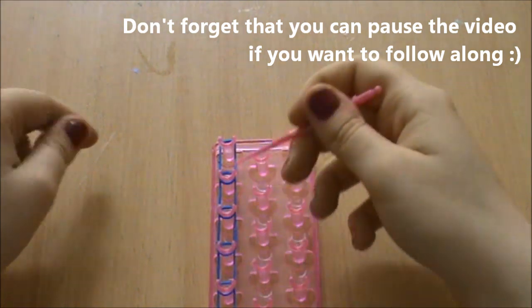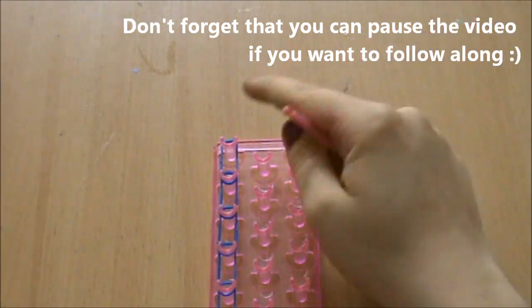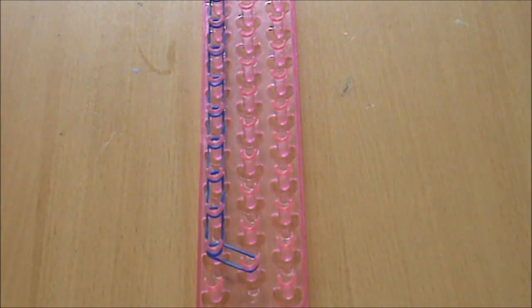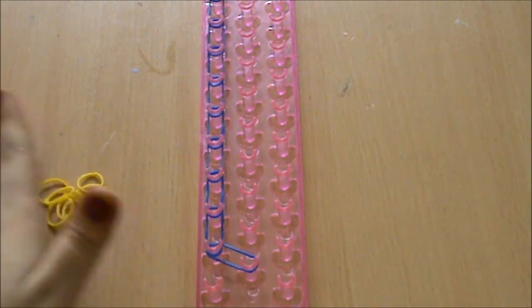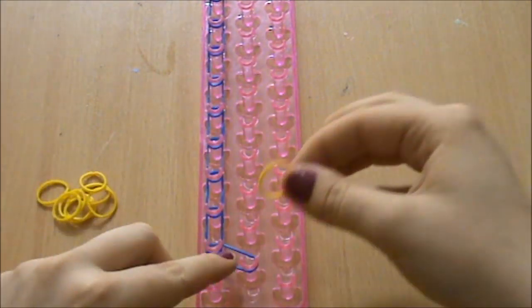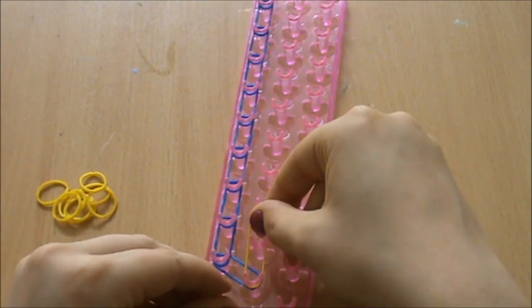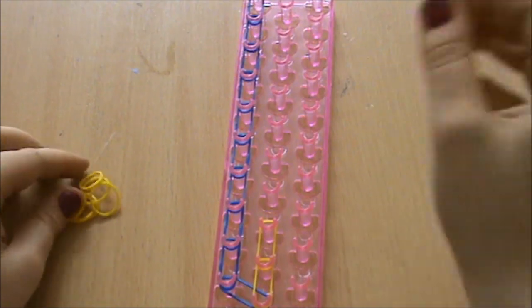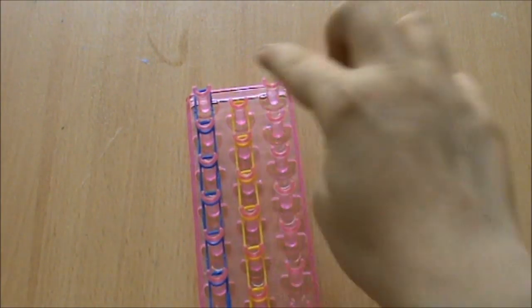So you want to hook the bands over all of the pegs all the way up to the top and you just keep going straight. And then back down at the bottom I'm getting my centre colour which is yellow and you need nine of these bands. And then much like before we're going over the bottom band in the middle and all the way up the centre rows all the way up to the top.